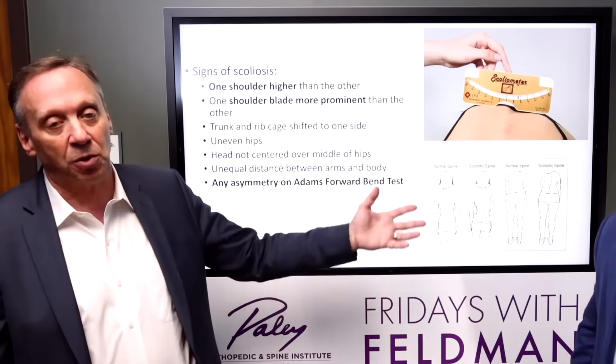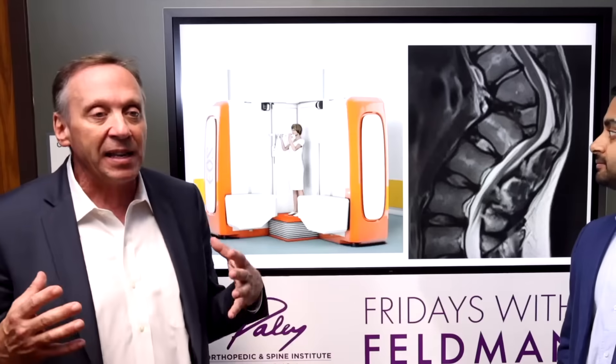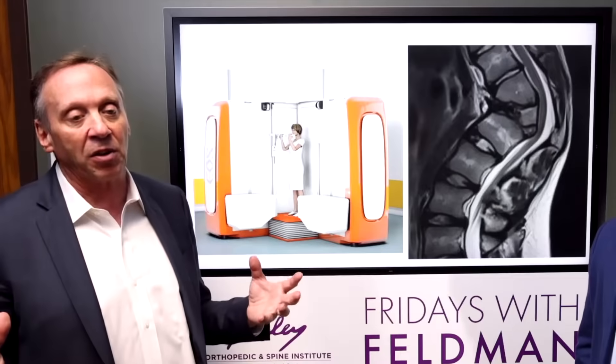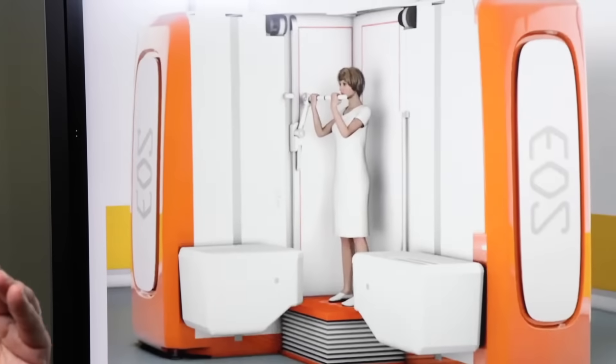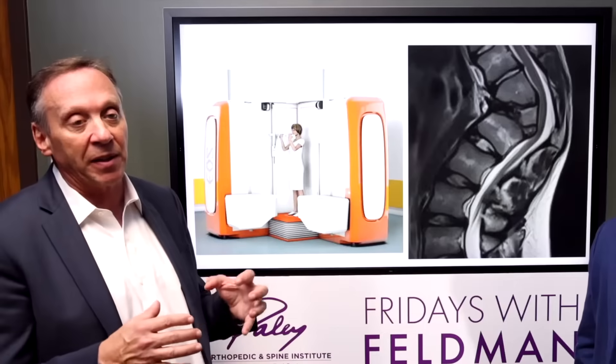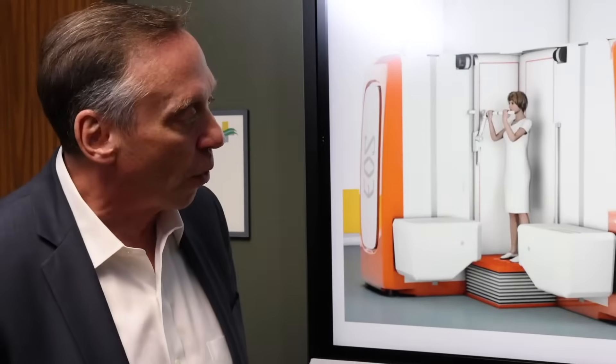First, we evaluate whether patients have scoliosis by looking for prominences and asymmetries, and then we get an x-ray. We really don't want to expose patients — mostly young women — to too much radiation. The EOS machine delivers only one-twelfth to one-twentieth the radiation exposure of a plain x-ray. We now have that here in the clinic. It's probably less radiation than flying from Florida to California, and we use it as infrequently as possible.